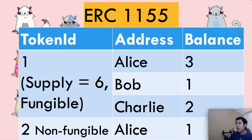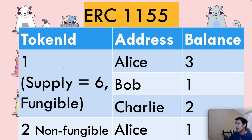ERC-1155 is basically a combination of ERC-20 and ERC-721. ERC-1155 can have token IDs that represent both fungible and non-fungible tokens. For example, token ID number 1 with a total supply of 6 is a fungible token — Alice can have 3, Bob 1, and Charlie 2. If there were only one instance of a token ID, it would be an NFT. That is the second case with token ID 2: there is only one of them, and that one token is owned by Alice.